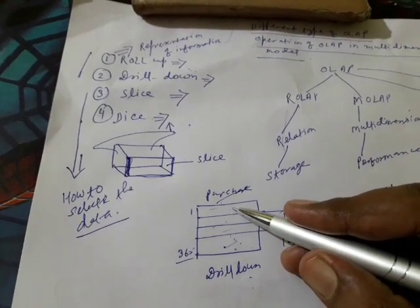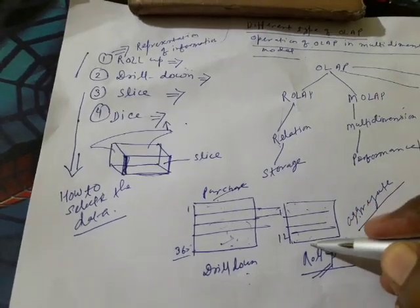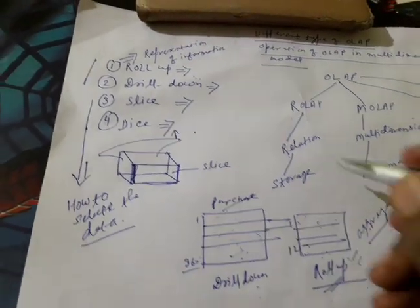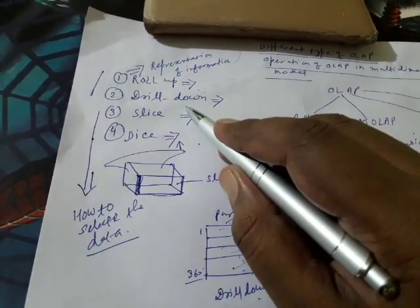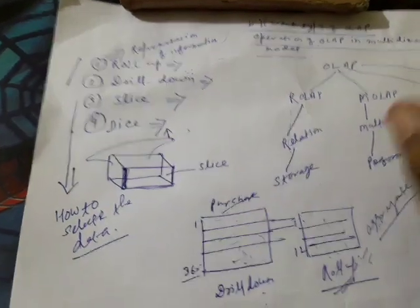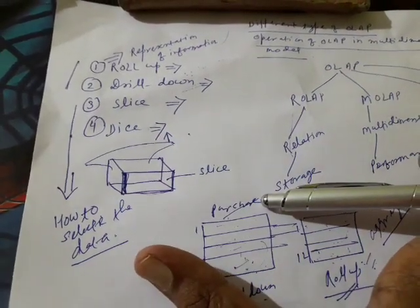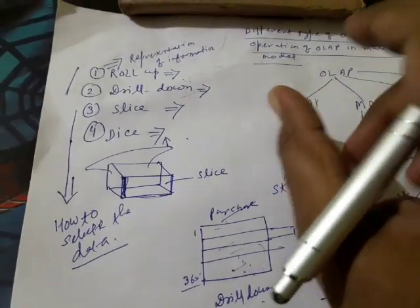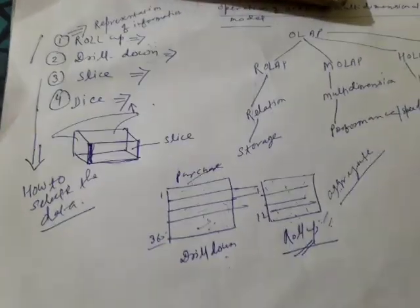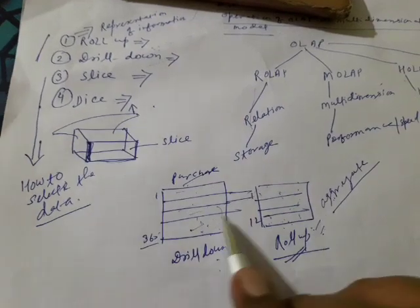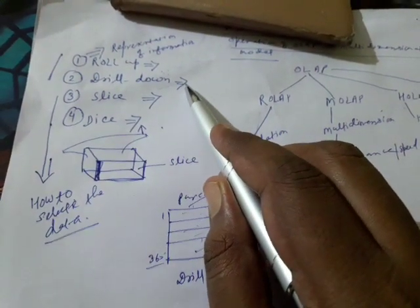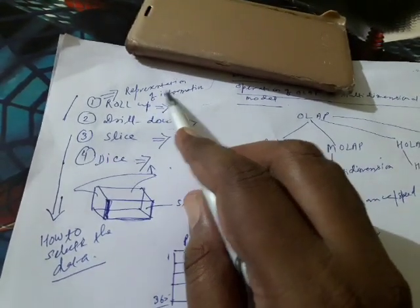For example, if you have sales data and roll it up month-wise, you get a summarized version. If you roll it up further by year, you get an even more aggregated version. Drill-down is the opposite — if you want to see data in detail format. Think of rolling paper: when rolled up, it takes less space, but when drilled down (unrolled), it takes more space and shows more detail. So drill-down gives you the detailed view.